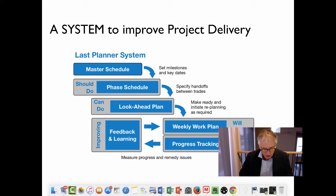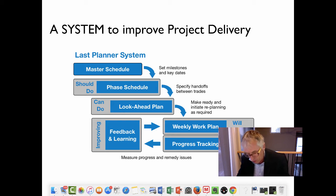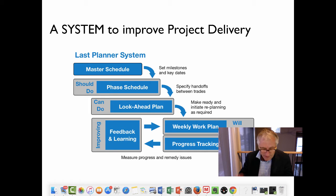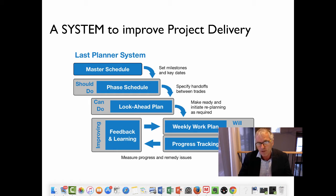The phase plans are pull planned by the trades doing the work. Working backwards from the milestone dates and upstream, trades pull the tasks needed for the completion of the work, establishing commitments and handoff dates for upstream work. This network of tasks and commitments establishes a high-level work plan based upon the available capacity and commitments to complete the work to a collaboratively developed phase plan.